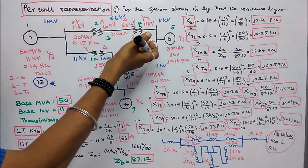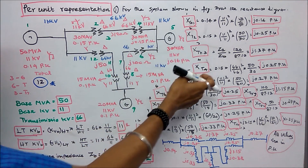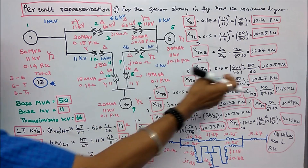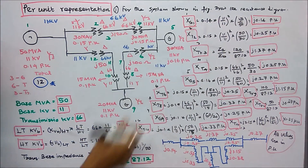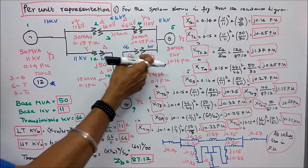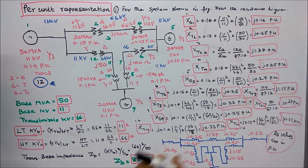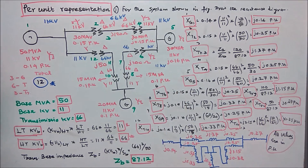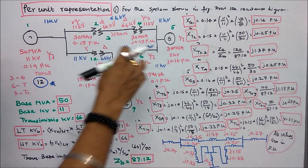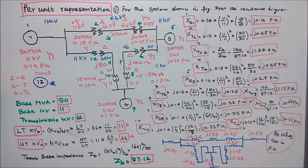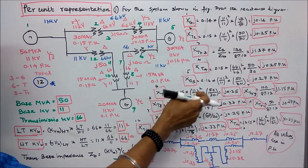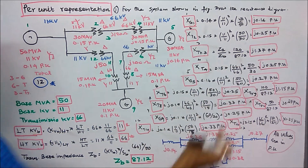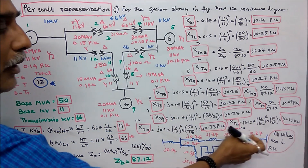For the next transformer set (components 4 and 6): 0.15 × (66/66)² × (50/30) = J0.25 per unit. Components 4 and 6 both equal J0.25. For Generator 3: 0.16 × (11/11)² × (50/30) = J0.27 per unit.